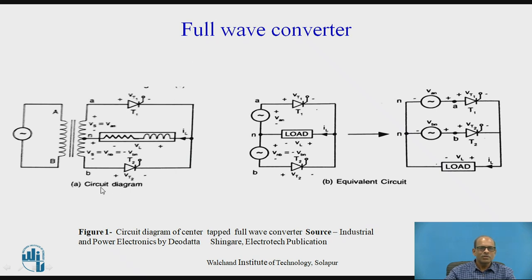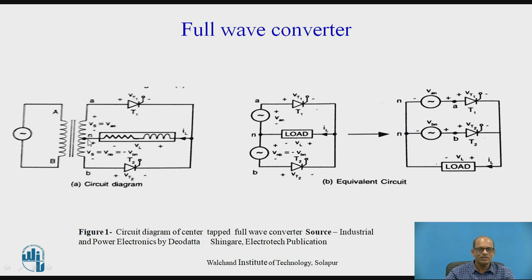Figure A shows the Circuit Diagram and Figure B is the Equivalent Circuit. In the circuit diagram, the input is applied through a Centre-Tap Transformer; the primary is fed with 230 volt AC. The secondary is Centre-Tap with points A, N (centre-tap), and B. T1 and T2 are the two SCRs; the cathodes of both SCRs are connected together, and from that point an RL load is connected between this point and the centre-tap of the secondary. In the Equivalent Circuit, Φ_AN and Φ_BN are shown as two sources, with SCR T1, SCR T2, and the load.